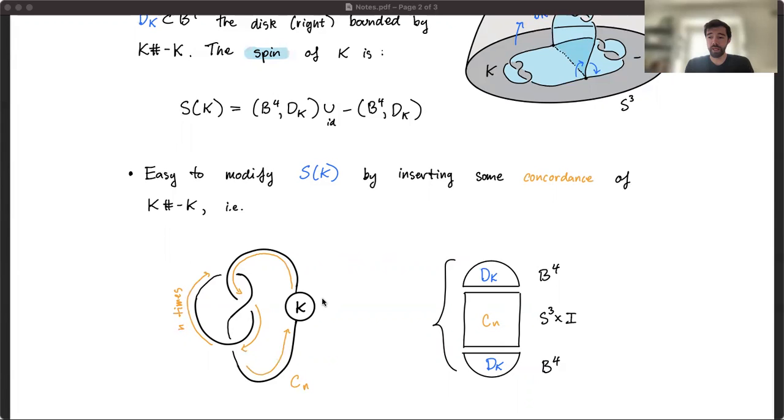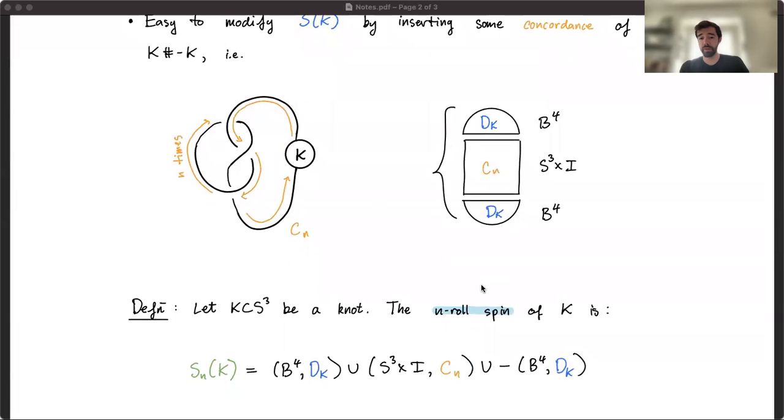What do you do? Well, you imagine one of the summands being very, very small, and you drag it for a loop through the other summand so you get back to where you started from. And so that isotopy traces out a concordance, which you can paste in this picture. And the resulting thing is what we call the roll-spin.